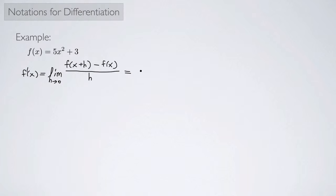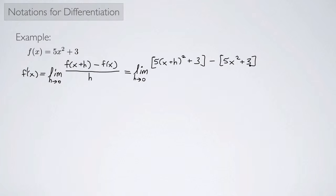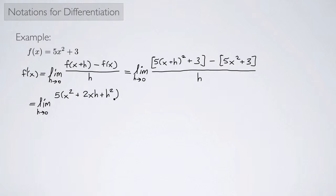So let's plug in for all these things. This is the limit as h approaches 0 of f of x plus h, which is 5 times x plus h squared plus 3, and then all of that minus f of x, which is 5x squared plus 3, and then all of this over h. Let's simplify that numerator: we have 5 times x squared plus 2xh plus h squared, from squaring that out, plus 3 minus 5x squared minus 3.